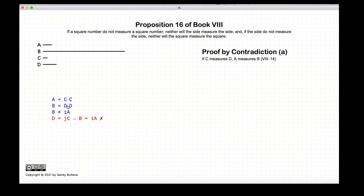Because we're doing it by contradiction, we're going to assume that C measures D.